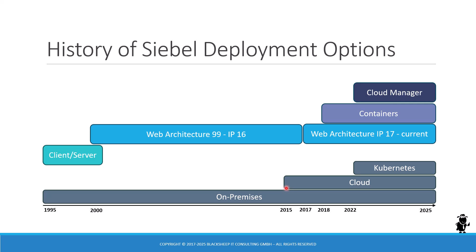The early days were a little bit clunky. Siebel 15 and Siebel 16 had cloud deployment options, but I guess nobody really used those or has them in production today. But with the IP 17 architecture Oracle really opened up the possibilities, and so the last decade has been dominated by cloud and containers.